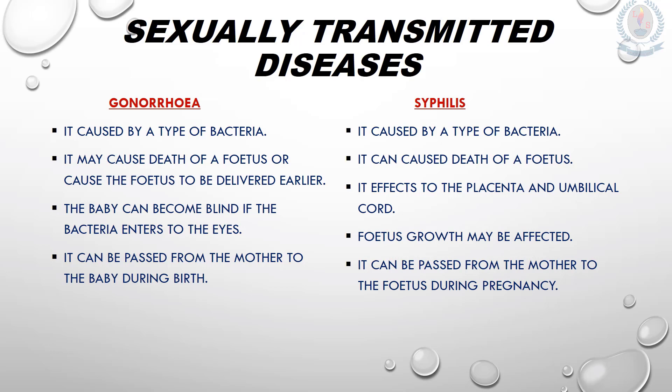Like gonorrhea, syphilis is also caused by a type of bacteria. It can cause the death of a fetus, and it also affects the placenta and the umbilical cord, which will affect the growth of the fetus. The fetus may also be delivered earlier. This disease may be passed from the mother to the fetus during pregnancy, and babies born with syphilis usually have problems with their spleen and liver.